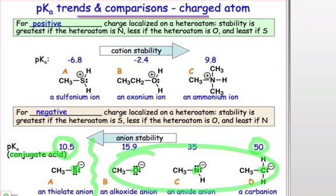While in the case of carbon, losing that proton makes a very unstable anion, and it's only lost with great difficulty.